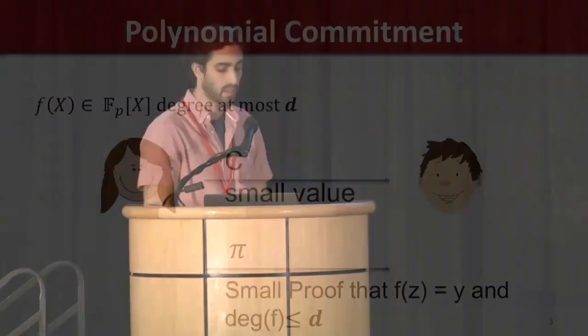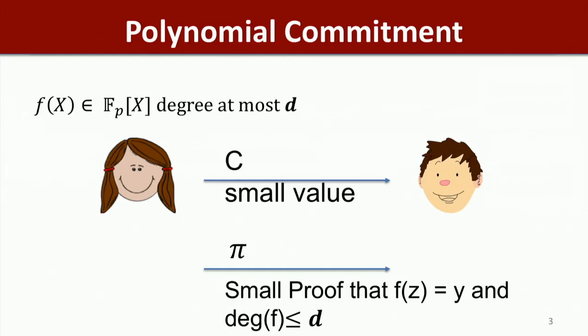The bulk of my talk will focus on the new polynomial commitment scheme itself. Informally, a polynomial commitment scheme allows one party to commit to a polynomial over field F_p of degree at most D with a small value C — ideally constant size. Then, later, be able to prove that the evaluation of the committed polynomial on some point Z equals some target Y, with a small proof — ideally constant size, or at least polylogarithmic in D.